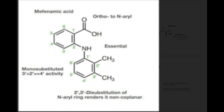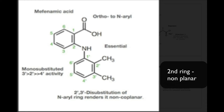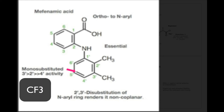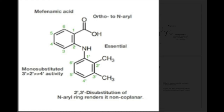So they add in the second ring here. And they found that if you actually make it non-planar — not in the same plane — it actually helps to increase the activity as an anti-inflammatory. If you put a mono substitution, for example flufenamic acid with a CF3 — just one substitution at the 3' position — this is very potent, the most potent anti-inflammatory.